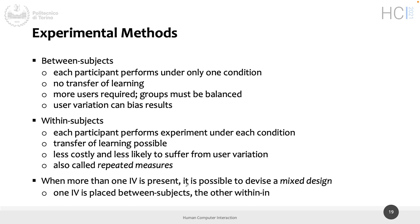There are clearly advantages and disadvantages. If you have three conditions — three, five, and seven menu items — and three participants in within-subject, you have three pieces of information about each condition, because everybody does everything. In between-subject, you have one piece of information about the three-item menu, one about the five, and one about the seven — three times less data per condition.